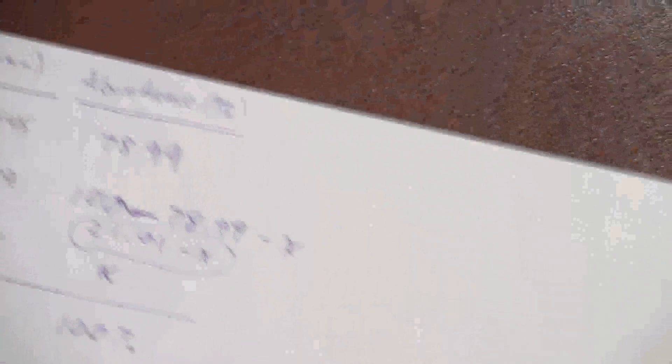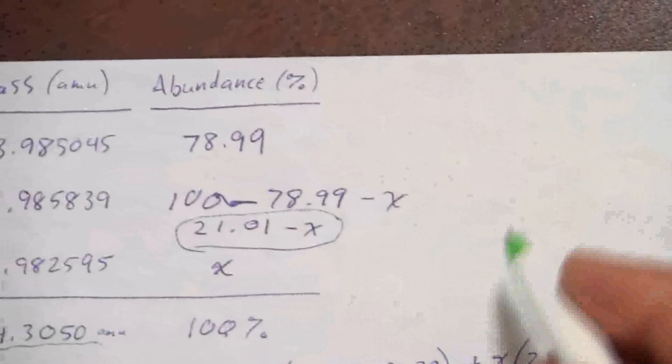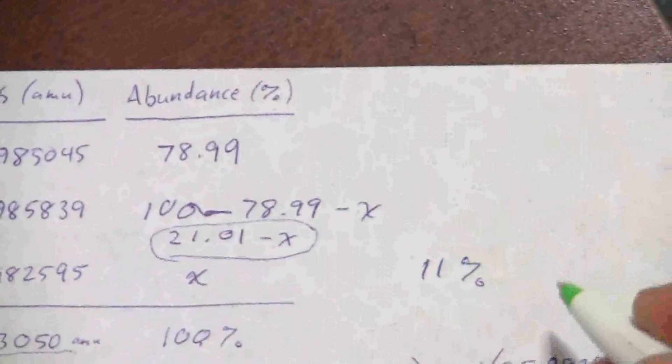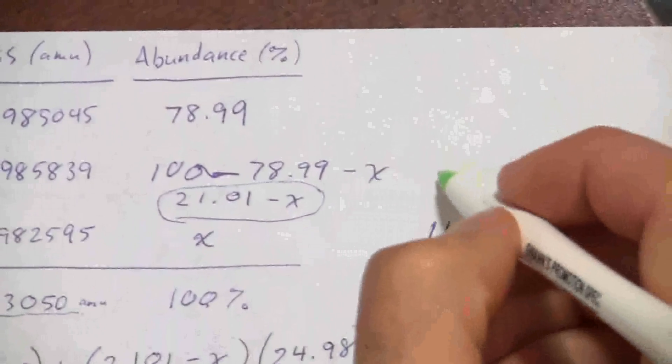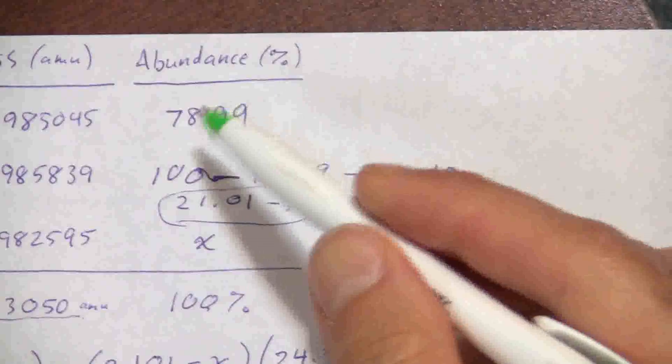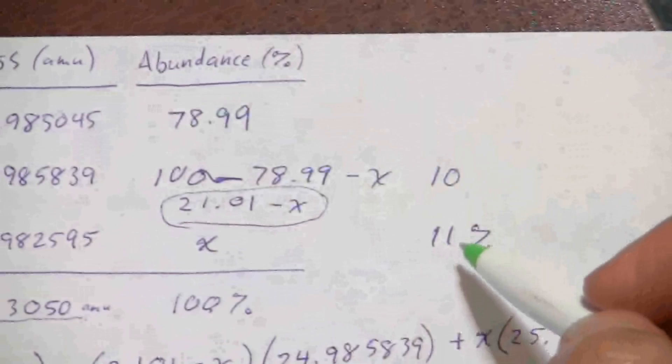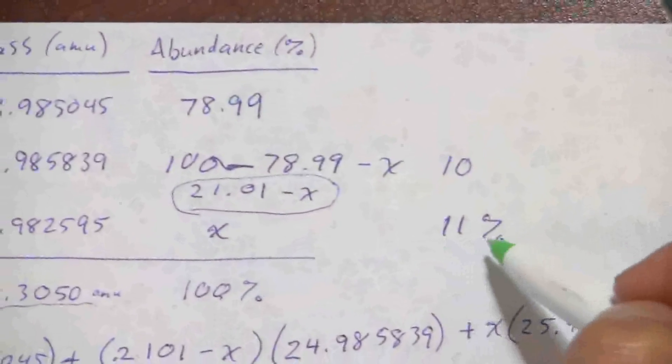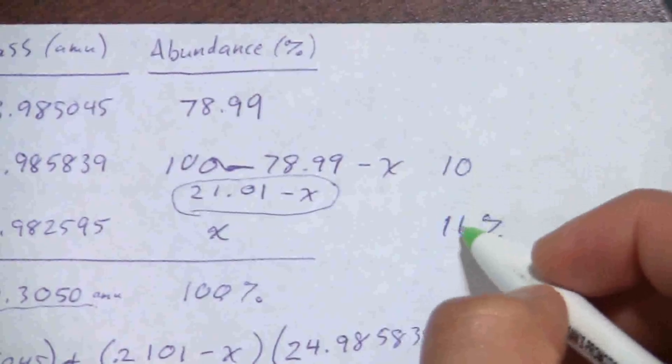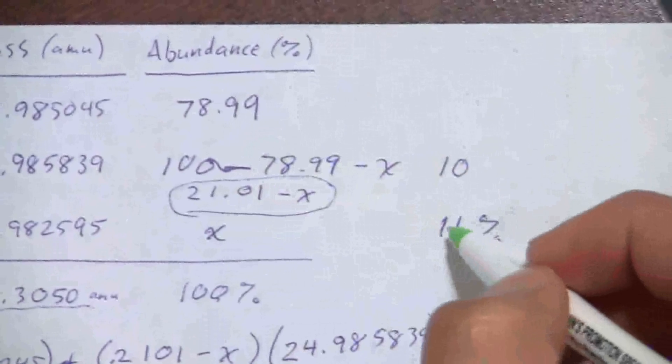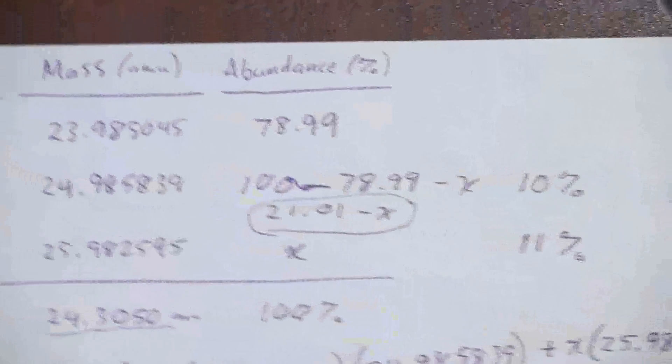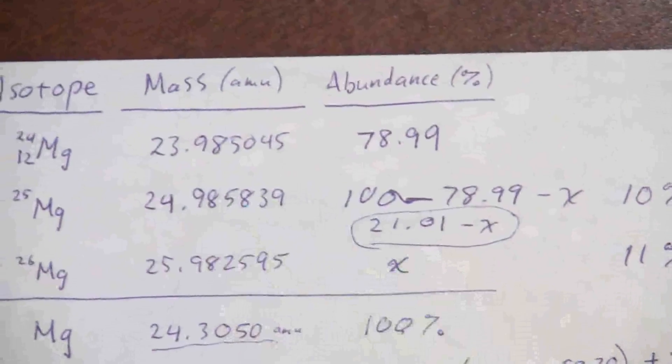So x is 0.11, which if I convert that to a percentage, this would be 11%, which means I would have 10% up here. Again, considering the fact that this is zero decimal places, I would round this to 79, and that'll leave me with 79, and this will be, bring it up to 90, so the 10% will be what remains of this isotope.